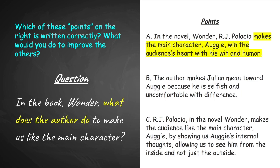The first point reads: in the novel Wonder, RJ Palacio makes the main character Augie win the audience's heart with his wit and humor. Hopefully you noticed that this point didn't actually answer the question. The question asks what the author did to make us like the main character, but whoever wrote this never talks about what the author did — they talk about what Augie did or the qualities that Augie had, but it never answers what the author did.